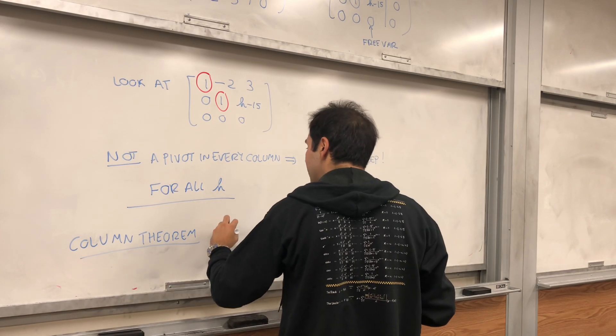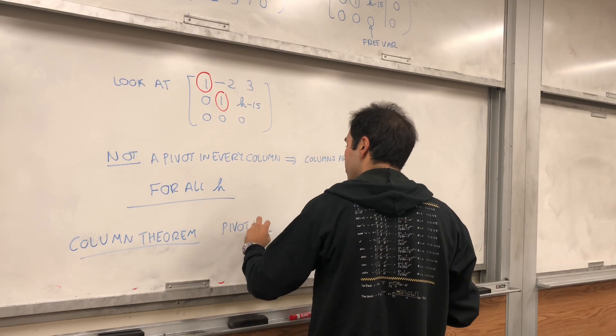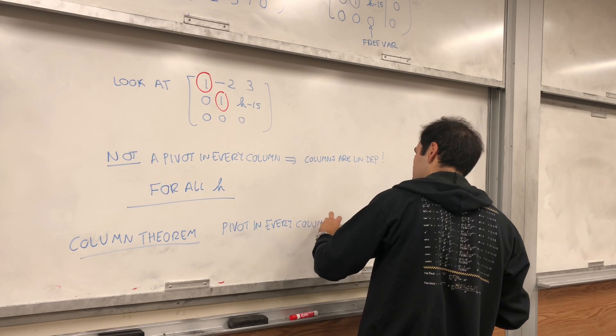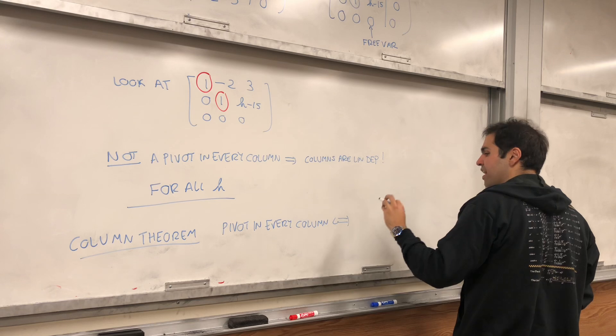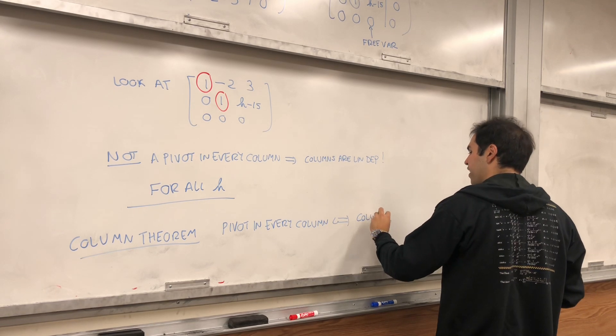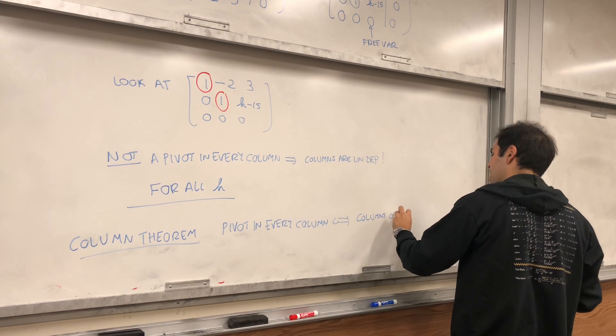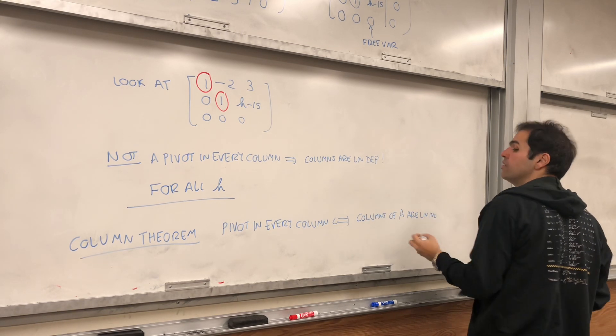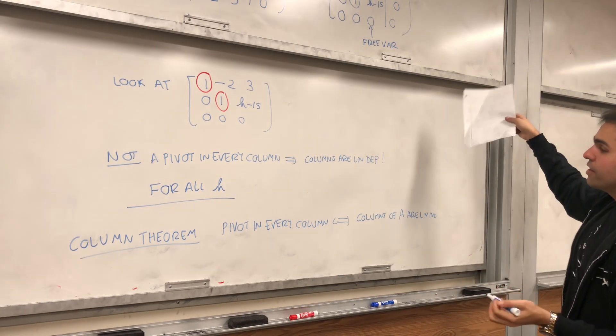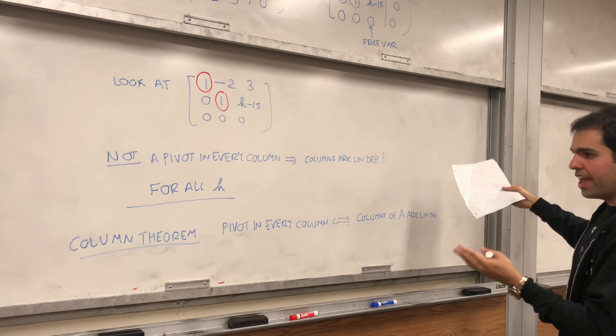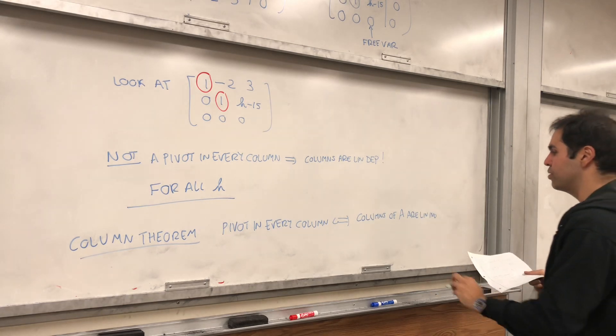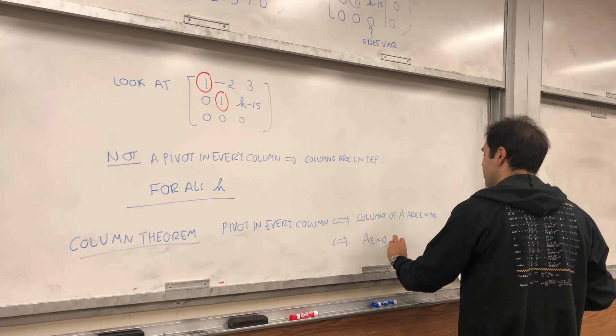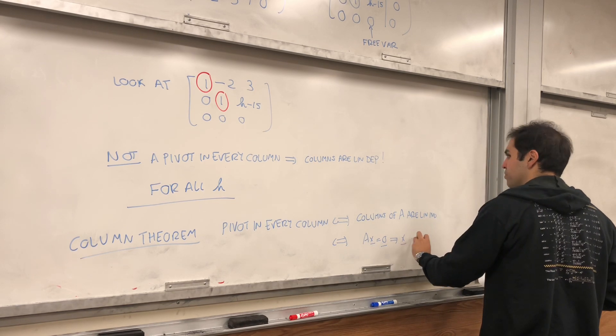If there's a pivot in every column of the coefficient matrix, that's the same, it implies also that columns of A are linearly independent. That's because if there's a pivot in every column, there are no free variables, so Ax = 0 must have just the trivial solution. And by what I just said, it also means that Ax = 0 implies x = 0.